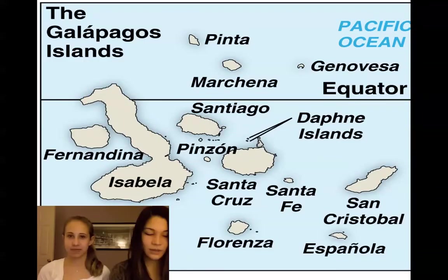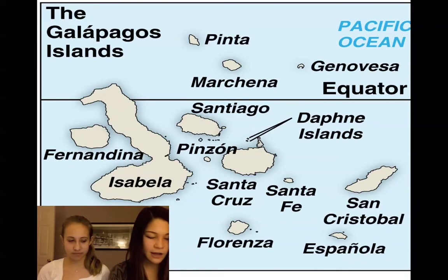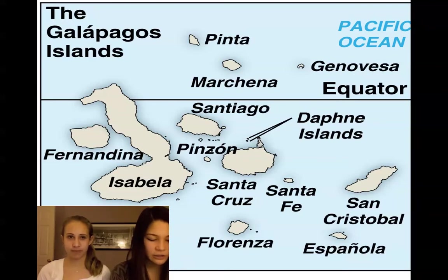While visiting the Galapagos, Darwin noticed different finches with beaks suited to their diet on the islands. His observations led him to publish The Origin of Species, in which he talked about adaptations and natural selection.